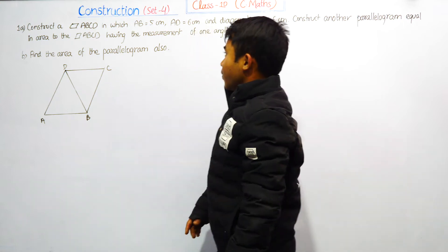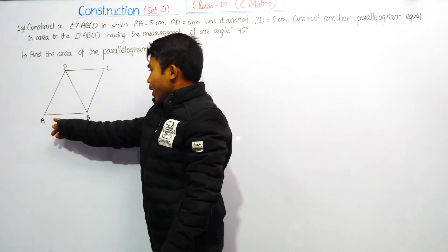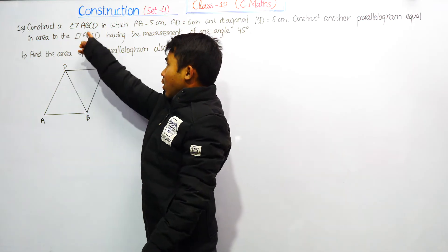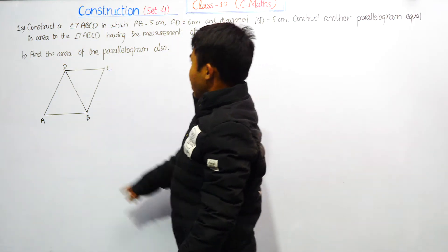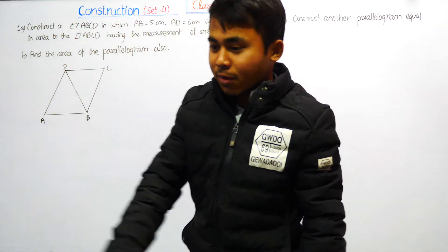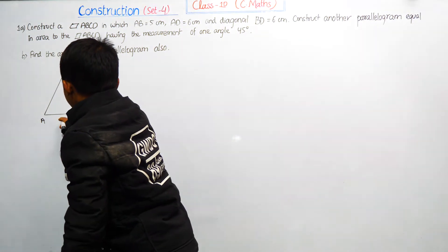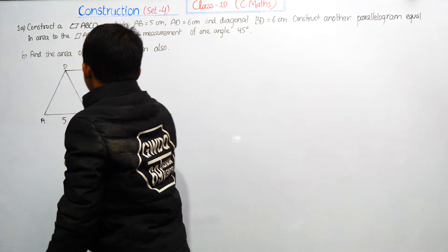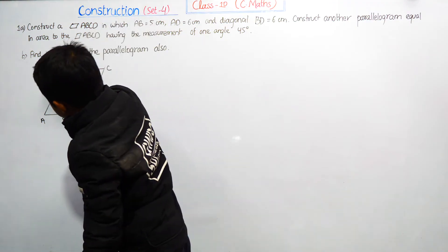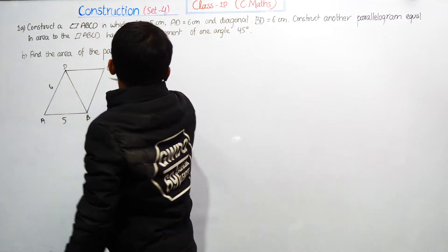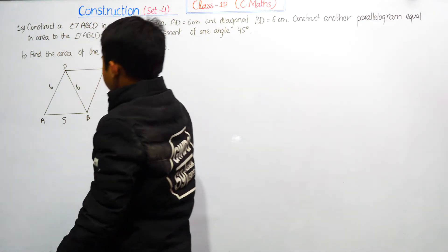Now we will start with the rough figure of parallelogram ABCD. The first side AB is equal to 5 cm, AD is equal to 6 cm, and diagonal BD is equal to 6 cm.